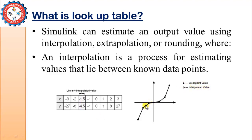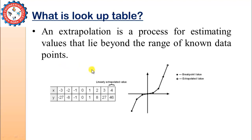In extrapolation, we are estimating some value beyond the limits. We have provided data up to breakpoint x = 3, but now we want to calculate the value at x = 4. This estimation is known as extrapolation — it is out of range. Extrapolation is the process of estimating values that lie beyond the range of the known data points. The accuracy again depends on the method used and how many data points you are considering — more data points generally gives more accuracy.